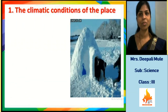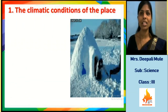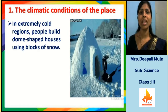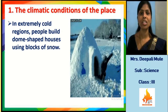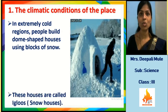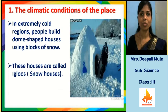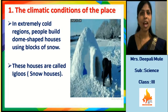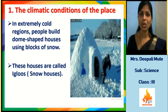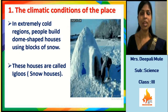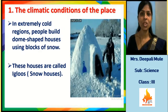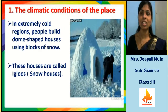Next is the igloo house, or snow house. In extremely cold regions, people build dome-shaped houses using blocks of snow. These houses are called snow houses. People living inside generate a little warm condition inside the igloo house.